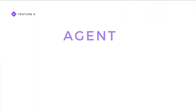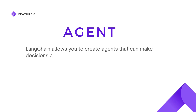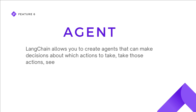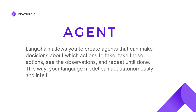LangChain allows you to create agents that can make decisions about which actions to take, take those actions, see the observations, and repeat until done. This way your language model can act autonomously and intelligently.